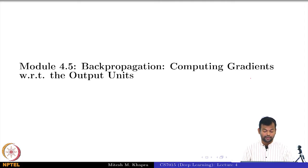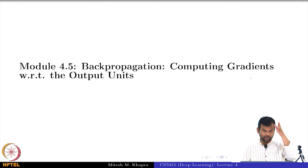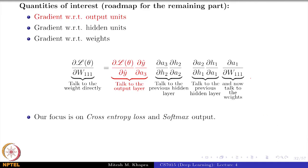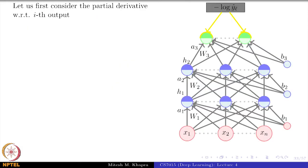Now we go to the next module where we will first see how to compute the gradient with respect to the output units, because that was the first guy in our chain — that is the first person we need to talk to. So that is the part we are going to focus on. This is the output, and when I say I want to compute the gradient with respect to the output unit, what is the quantity that I am looking for? What I meant by output unit is this entire thing.